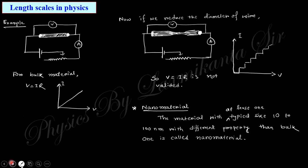At the very beginning you need to know about the length scale in physics. The SI unit includes meter, centimeter, micrometer, nanometer, angstrom, femtometer, and so on. We need to understand how the length scale affects the physical property of a material. Consider a simple experiment: a conductor or resistor through which current flows. If you change the current and measure the corresponding voltage, it obeys Ohm's law — V equals IR — and the graph is linear, passing through the origin.